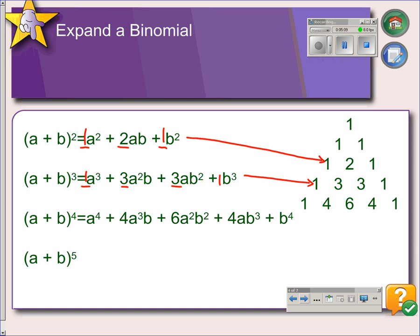And in the fourth term, we have 1, 4, 6, 4, 1, which are the terms in this row. So if I add the fifth row in here, 1, 5, 10, 10, 5, 1, I can use it to expand my binomial here.